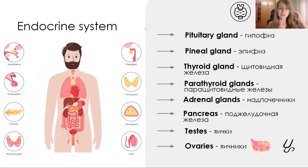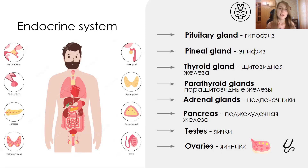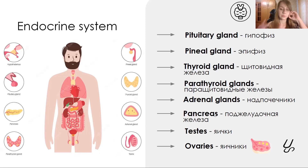Endocrine system. The endocrine system is a really important one. Endocrine glands produce hormones, and these hormones have many functions in our organism — they affect a lot of body organs and tissues. The endocrine glands include the pituitary gland, pineal gland, thyroid gland, parathyroid glands, adrenal glands, pancreas, testes, and ovaries.